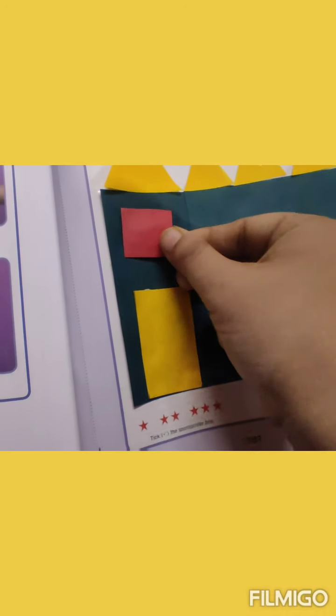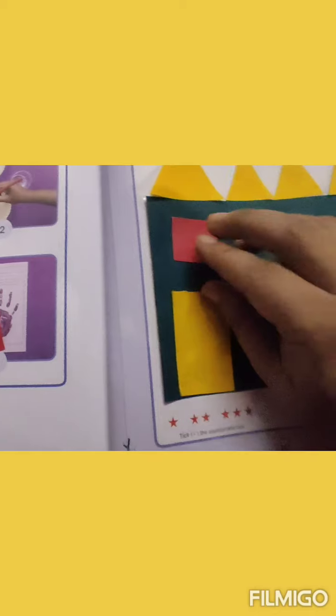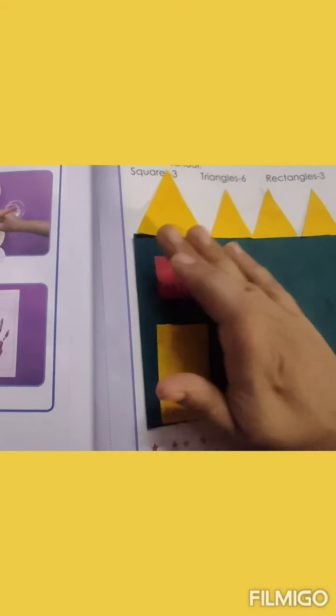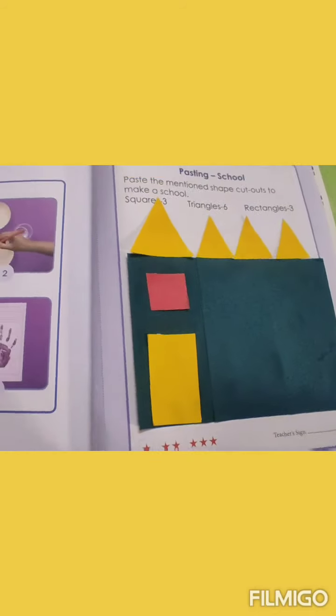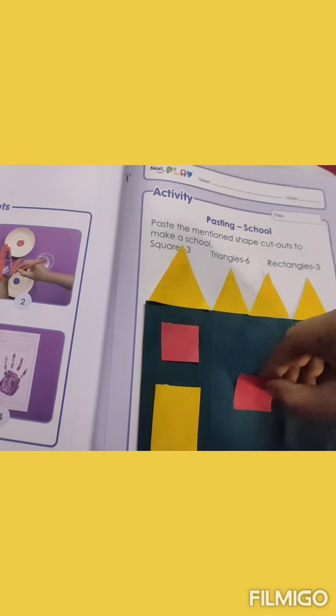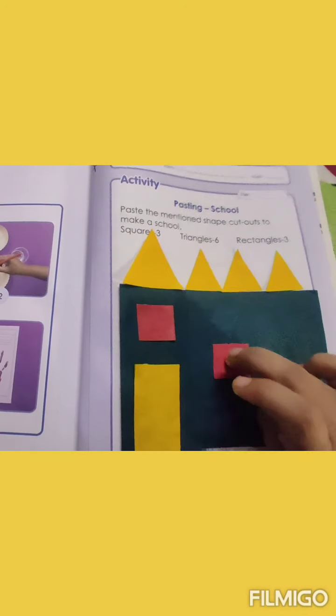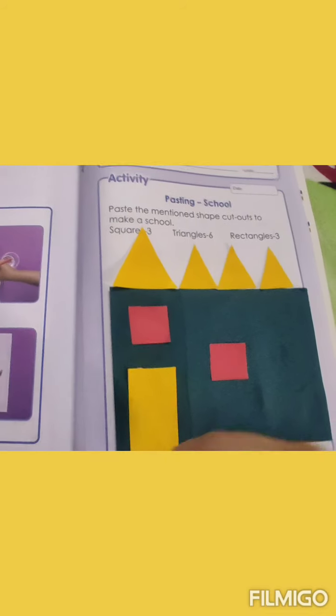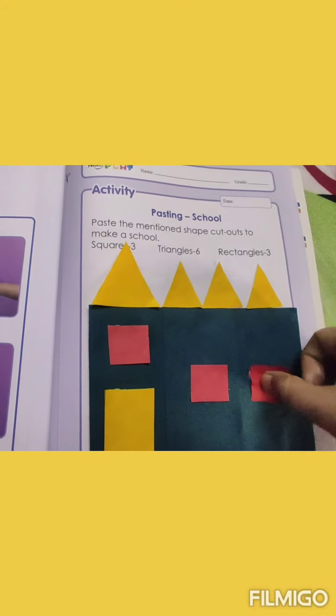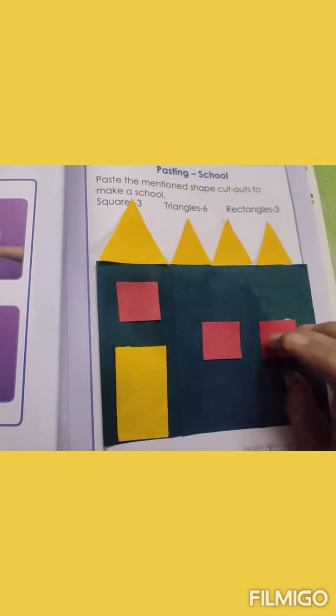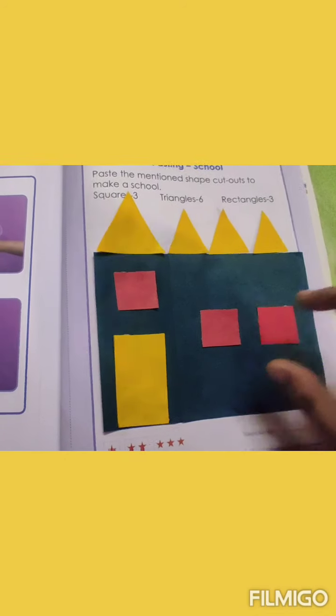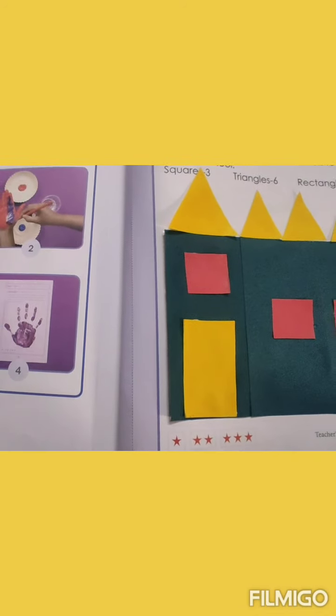Now paste this square red color. Here. Press it. Now paste 2 squares here. 1 and 2. Alright. Now paste 2 triangles here.